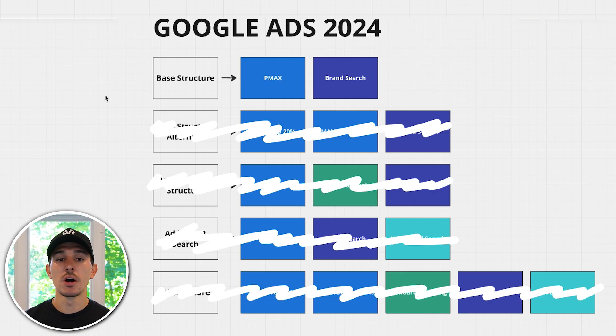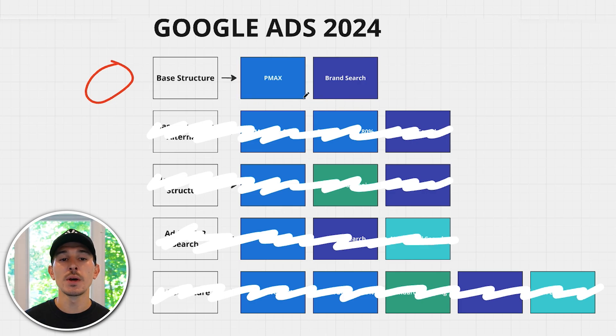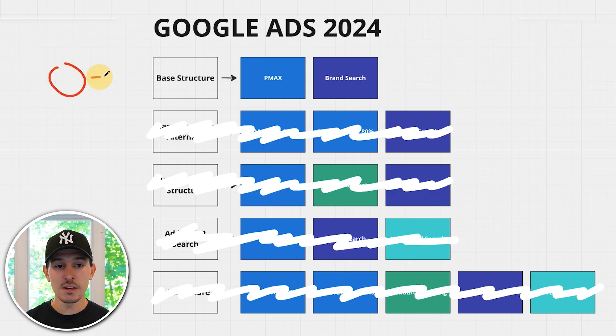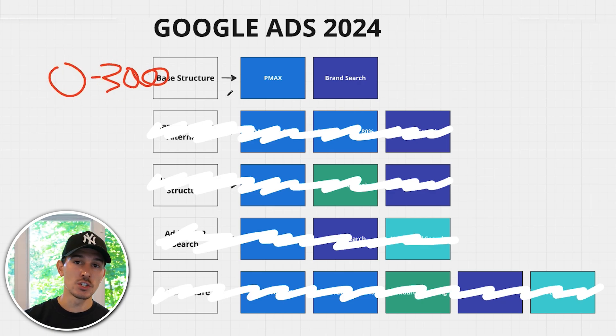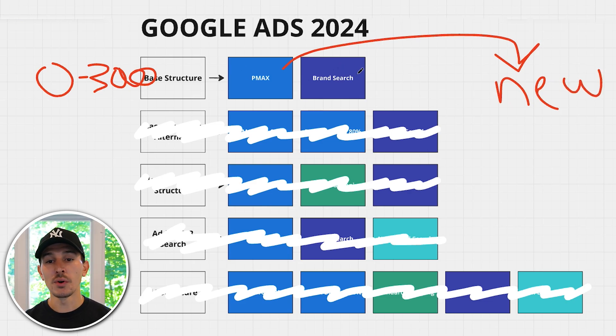The very first structure is the base structure: a single Performance Max campaign and a single branded search campaign. If you're spending anywhere from $0 to $3,000 in monthly ad spend on Google Ads, this structure is going to get you the most signals and the most bang for your buck. The Performance Max campaign is meant to drive and acquire new customers to your site. Your branded search campaign is meant to protect your brand.